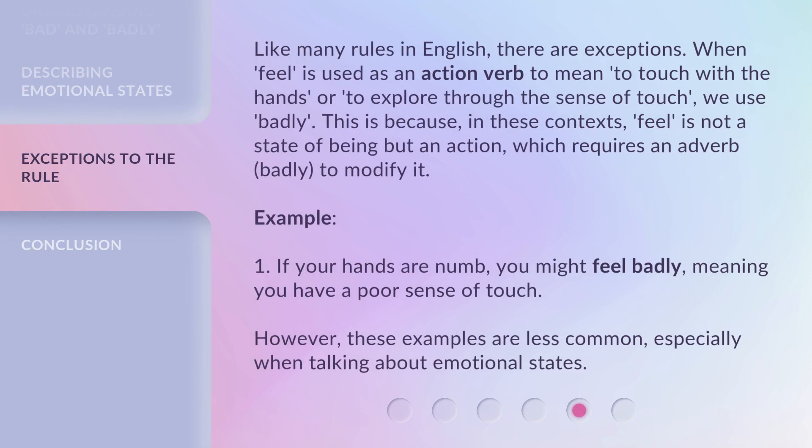Like many rules in English, there are exceptions. When feel is used as an action verb to mean to touch with the hands or to explore through the sense of touch, we use badly. This is because, in these contexts, feel is not a state of being but an action, which requires an adverb, badly, to modify it. For example: if your hands are numb, you might feel badly, meaning you have a poor sense of touch. However, these examples are less common, especially when talking about emotional states.